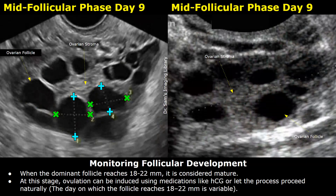When the size of the dominant follicle reaches 18 to 22 millimeters, it is considered a mature follicle. This is the time when ovulation can be induced using medicines or may occur naturally. These images are obtained on day nine — in the left image and the right image, the dominant follicle is visible and its size is increasing.